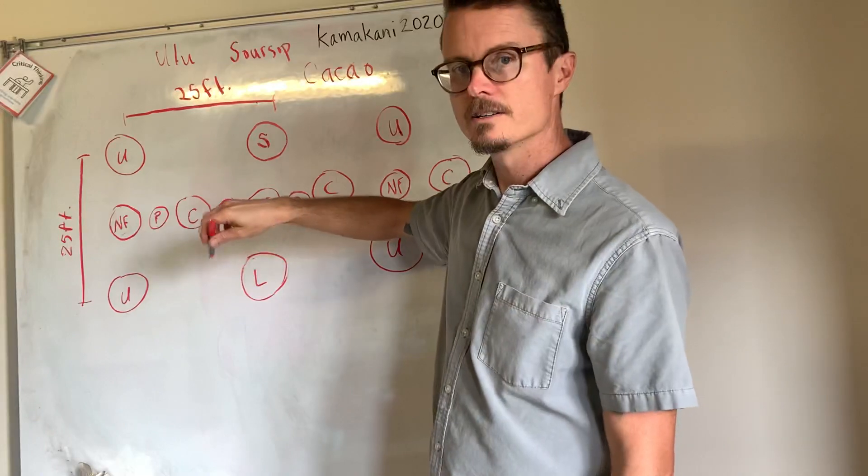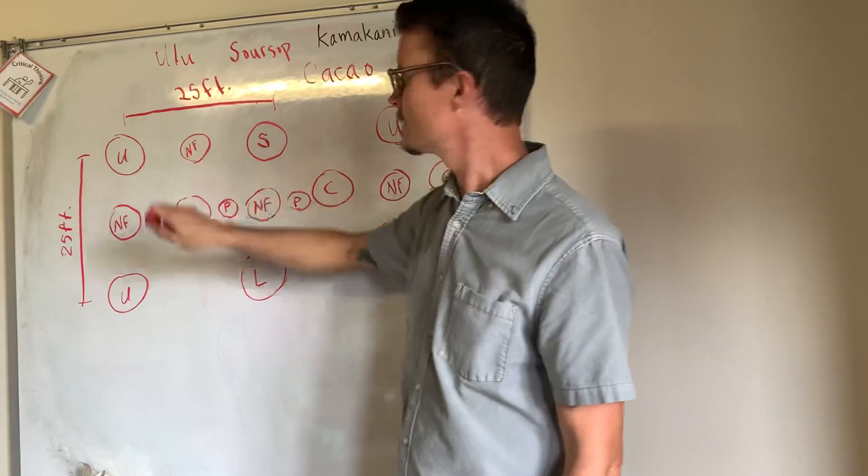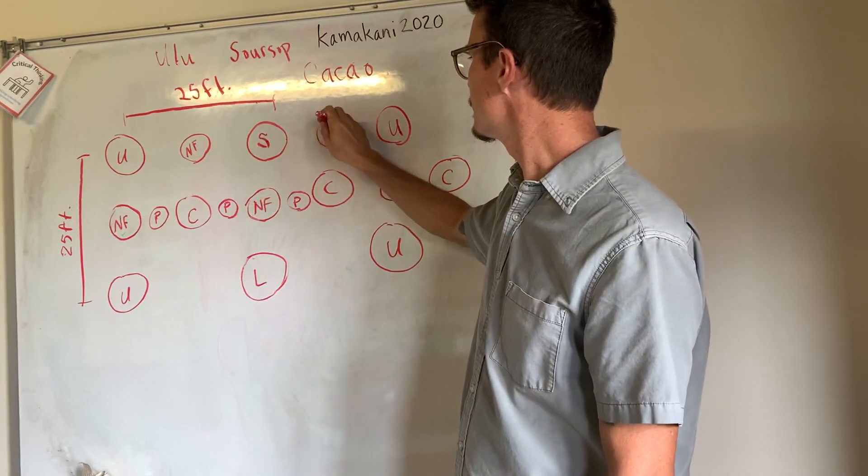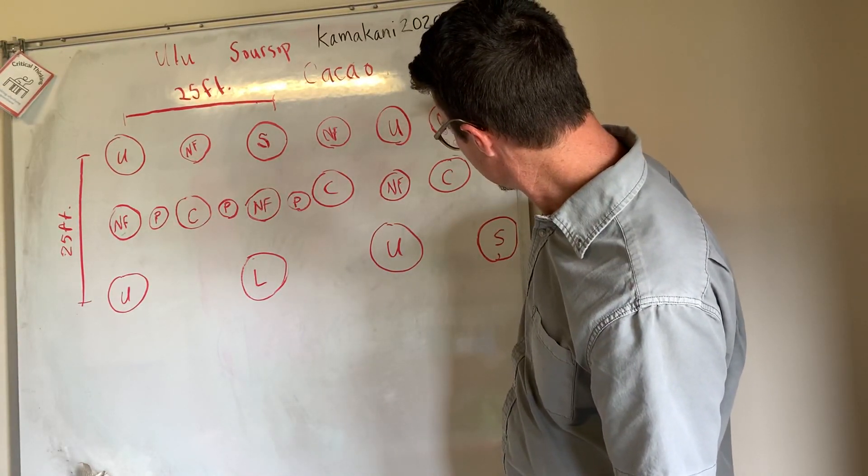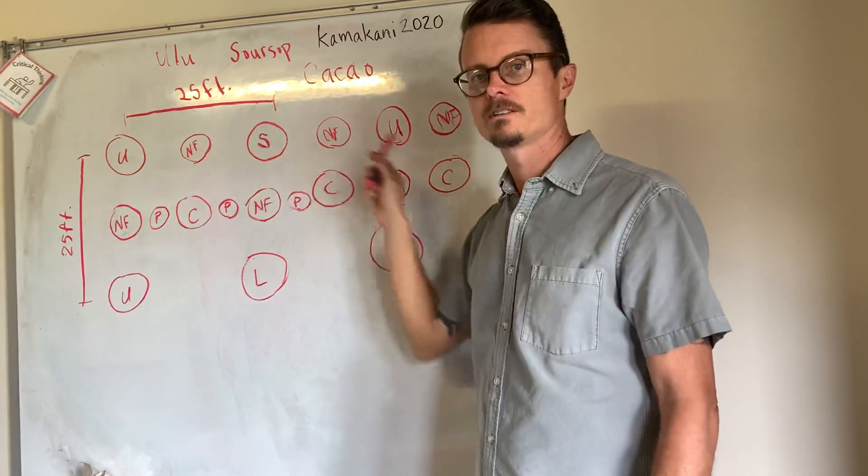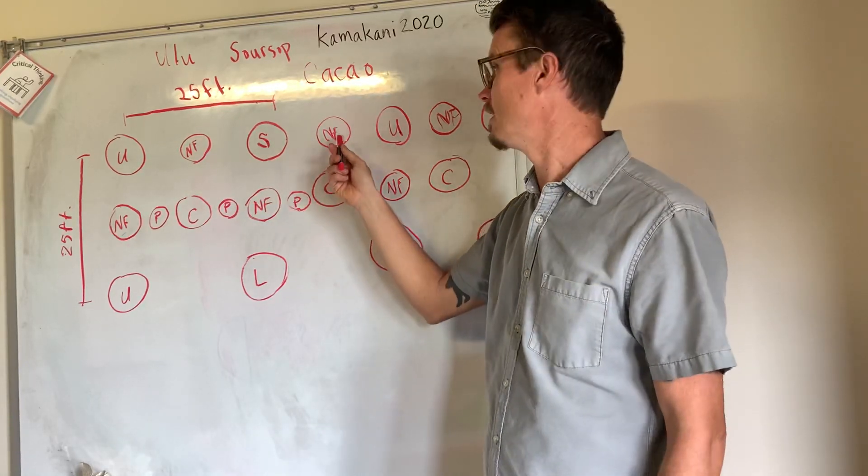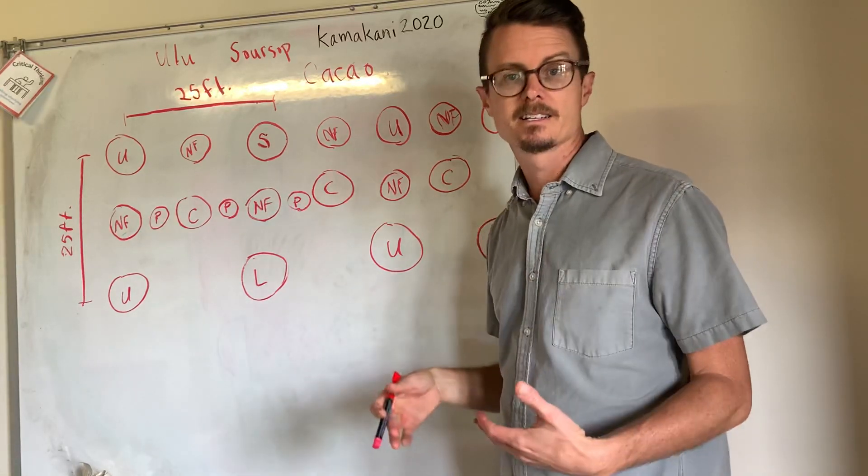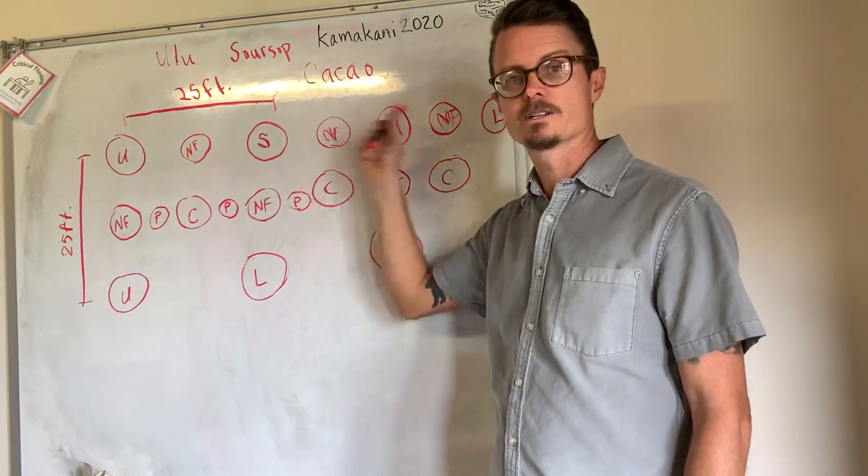And then up in our top rows here we're going to do more of a shorter term nitrogen fixing trees. Now these are going to get pruned and used to mulch the fruit trees. So these are not going to be around for all that long, maybe a couple years before we really start to prune them back on a consistent basis and feed them to our ulu, feed them to our soursop and our longan.